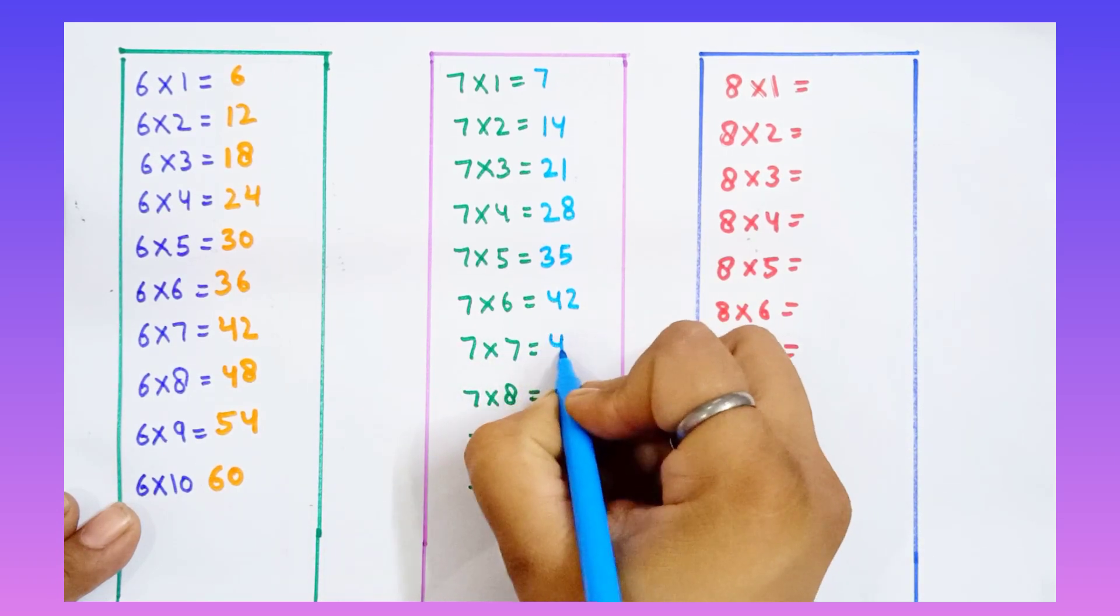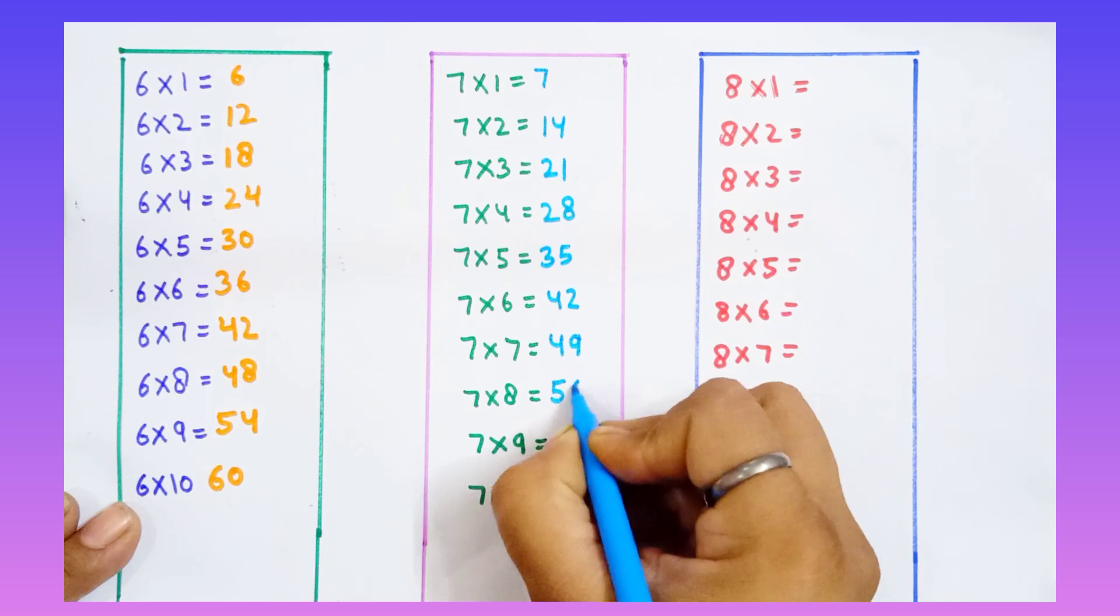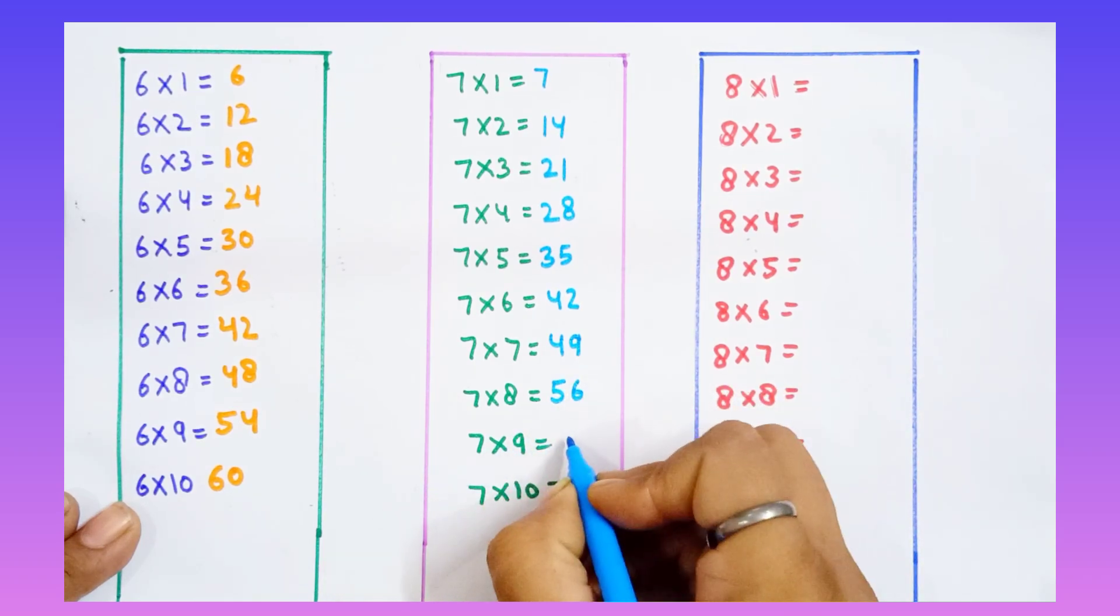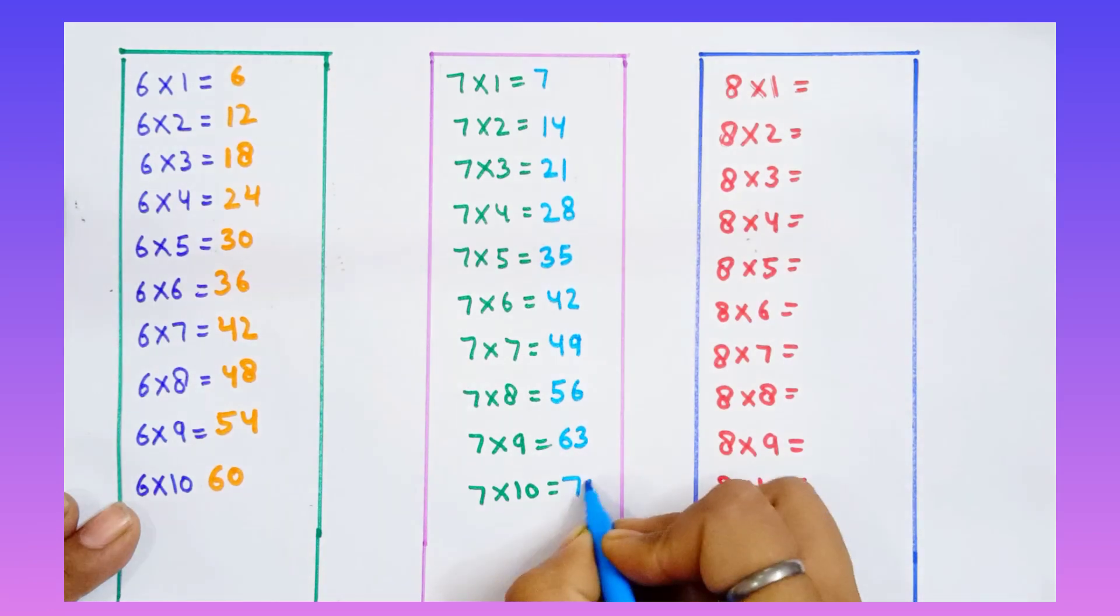7 sevens are 49. 7 eights are 56. 7 nines are 63. 7 tens are 70.